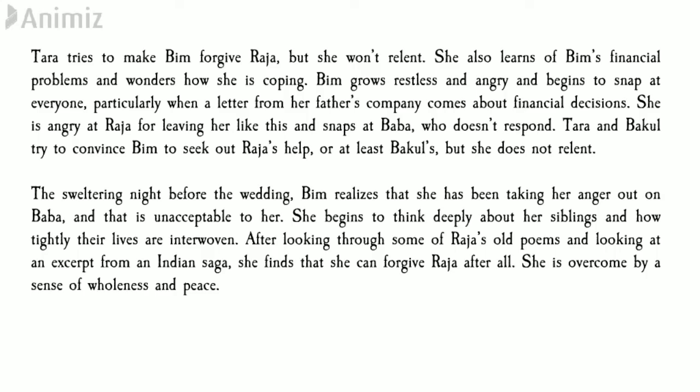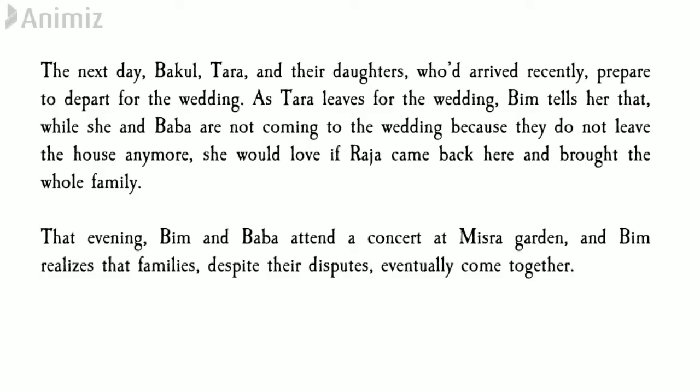The night before the wedding of Raja's daughter, Vimla started having old memories — thinking about her childhood, the good days she had spent with Baba, Raja, and Tara. She eventually realized she could forgive Raja for his mistakes, because family always stands together — that was her belief. She was also going through some old poems of Raja. She was also upset that she had misbehaved with Baba, as snapping at a mentally retarded person who cannot comprehend events around him would not make anything better.